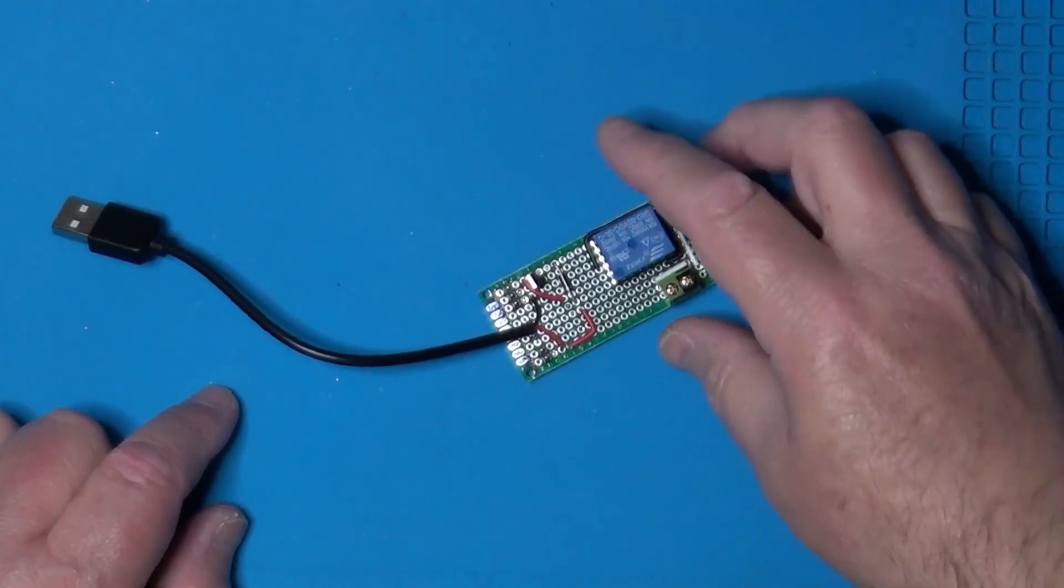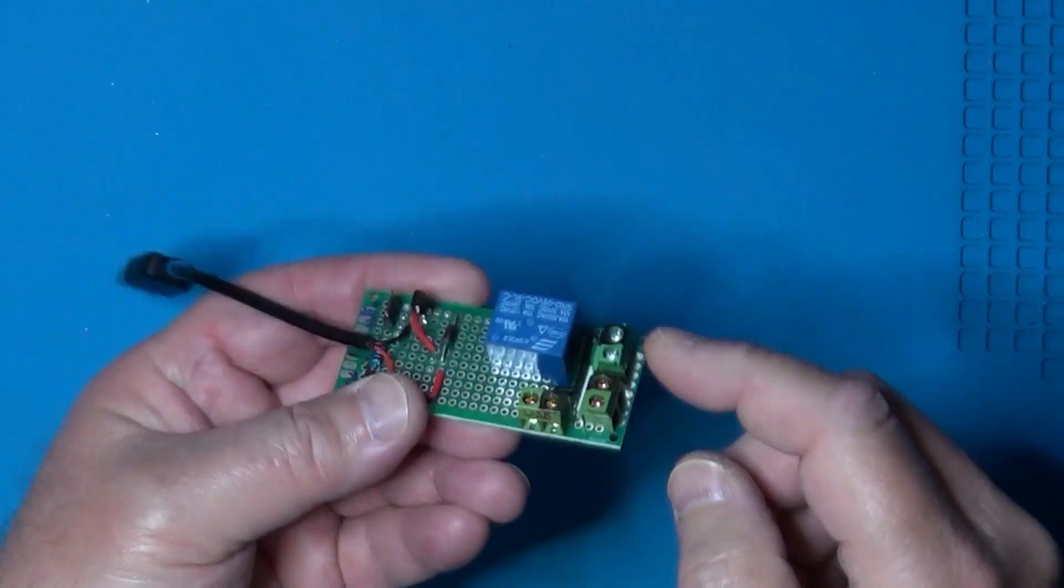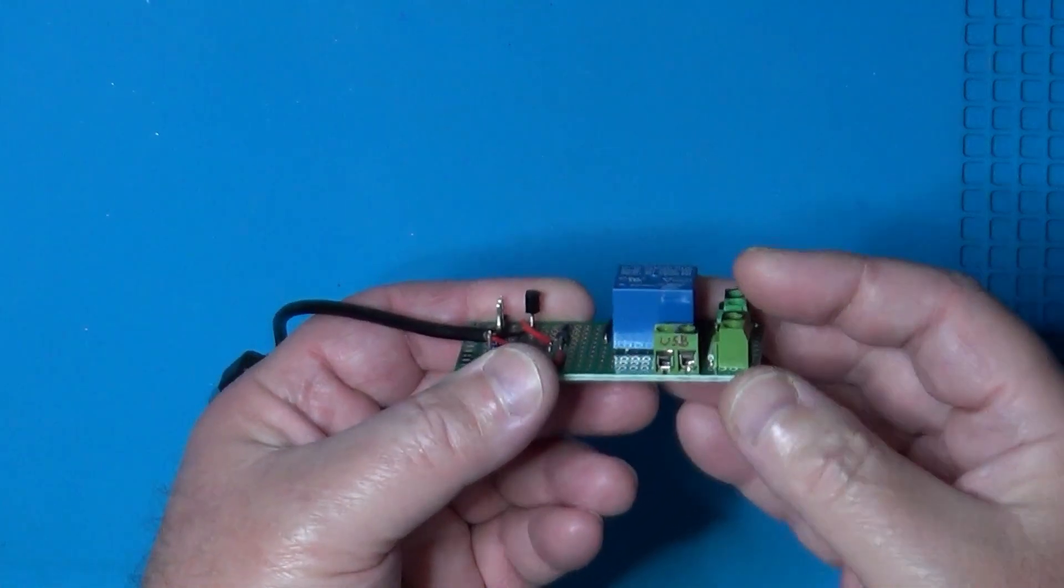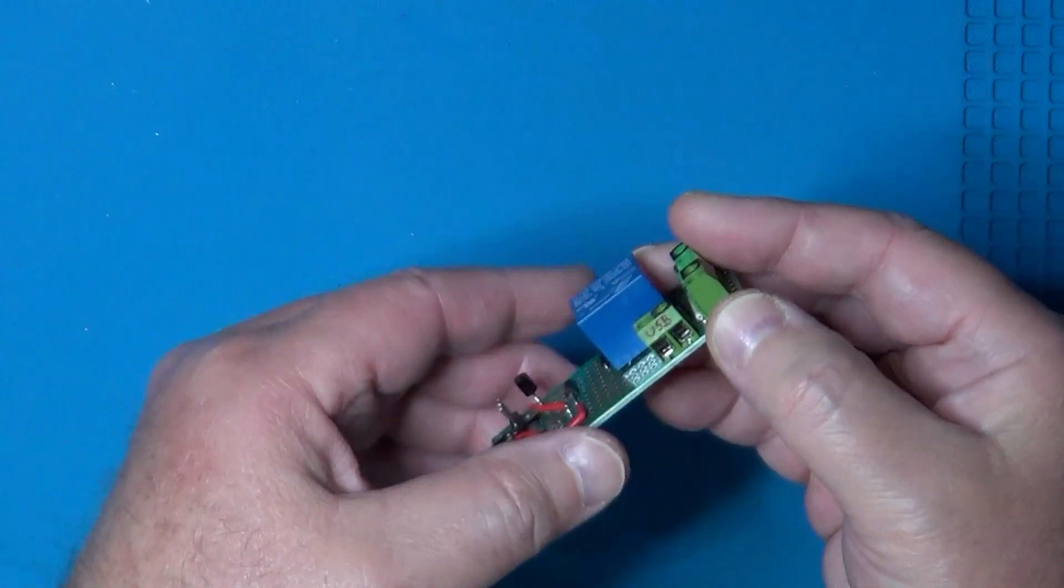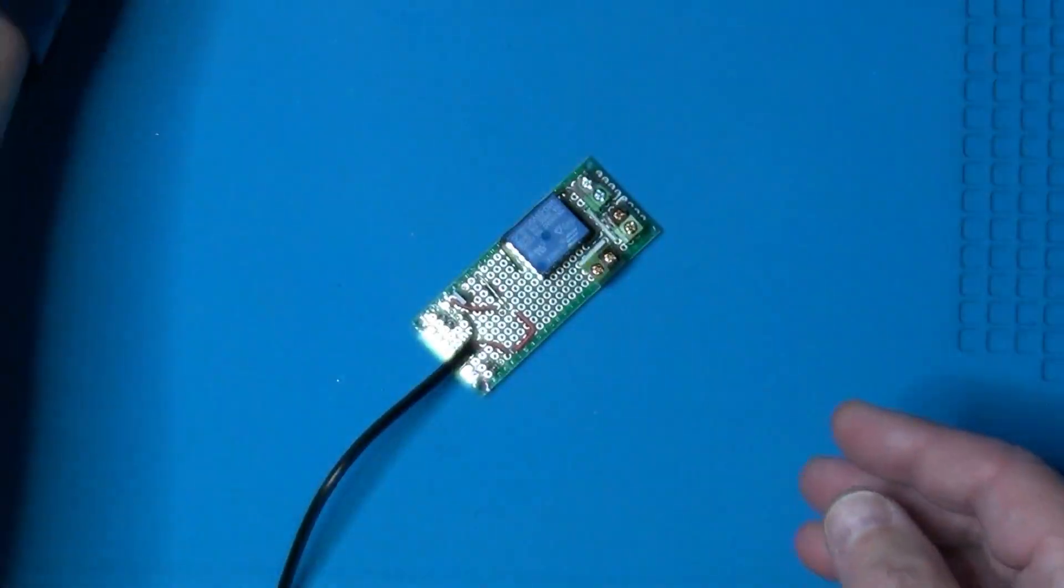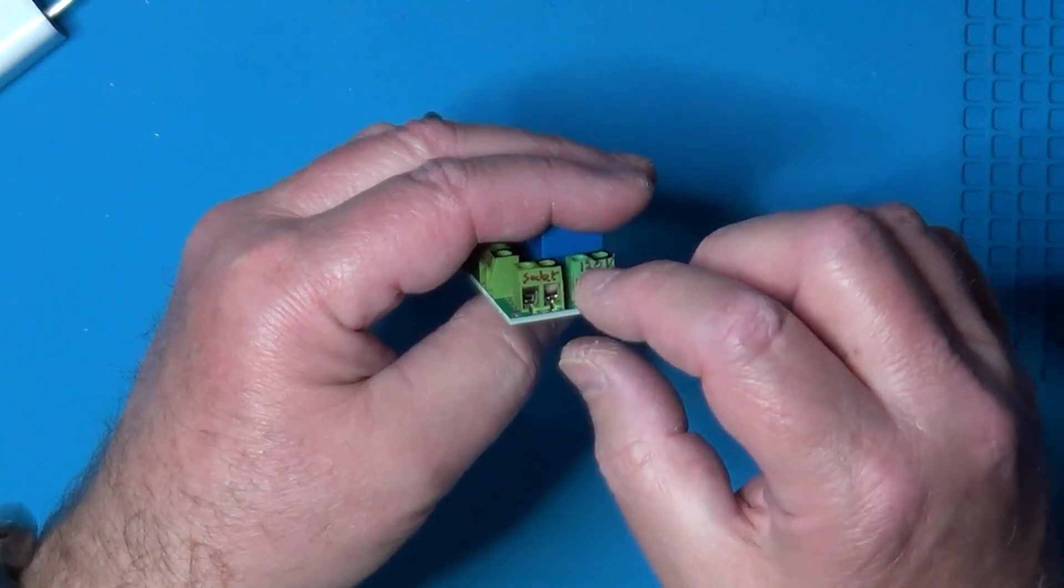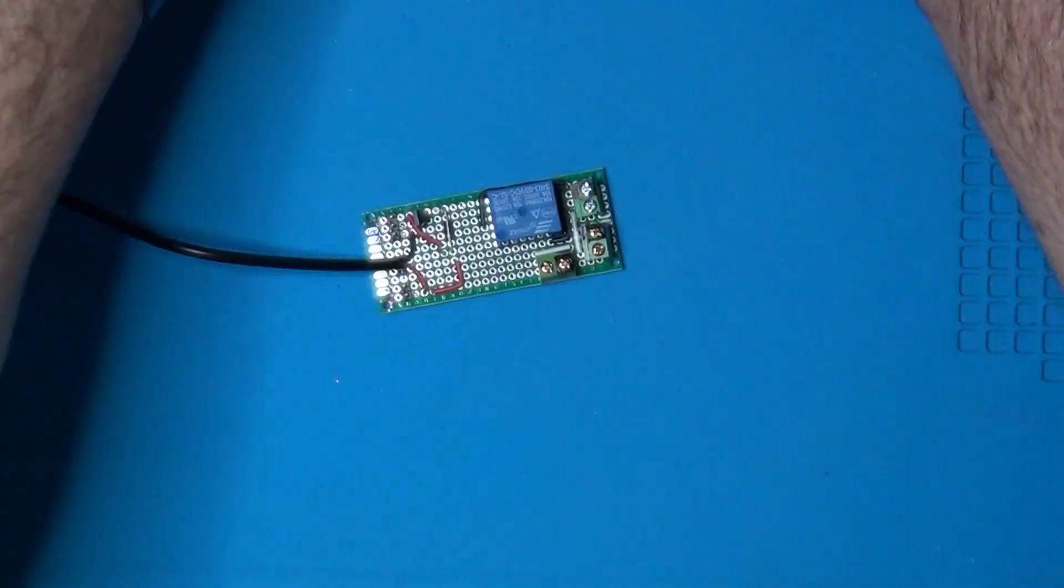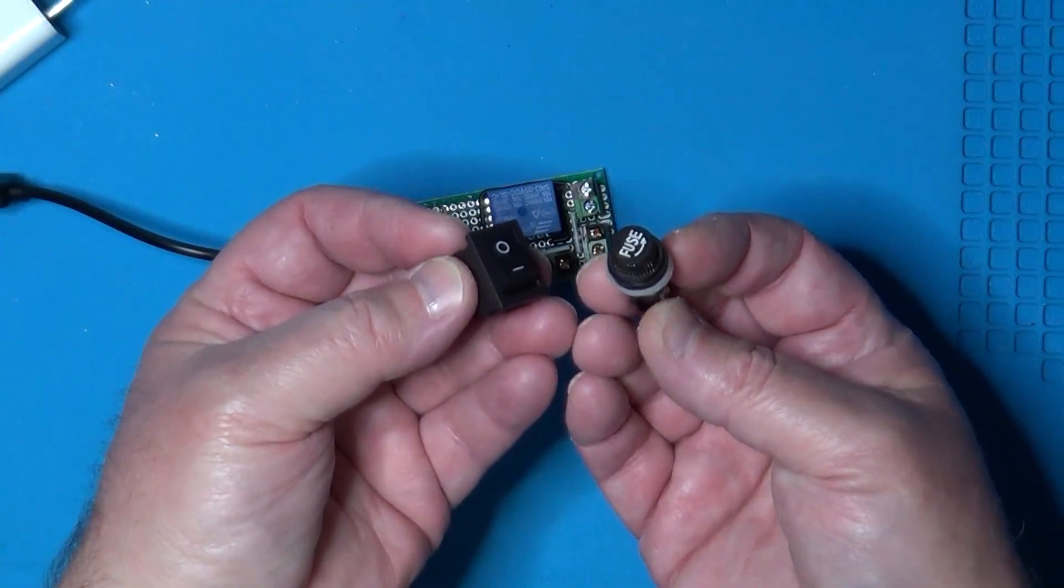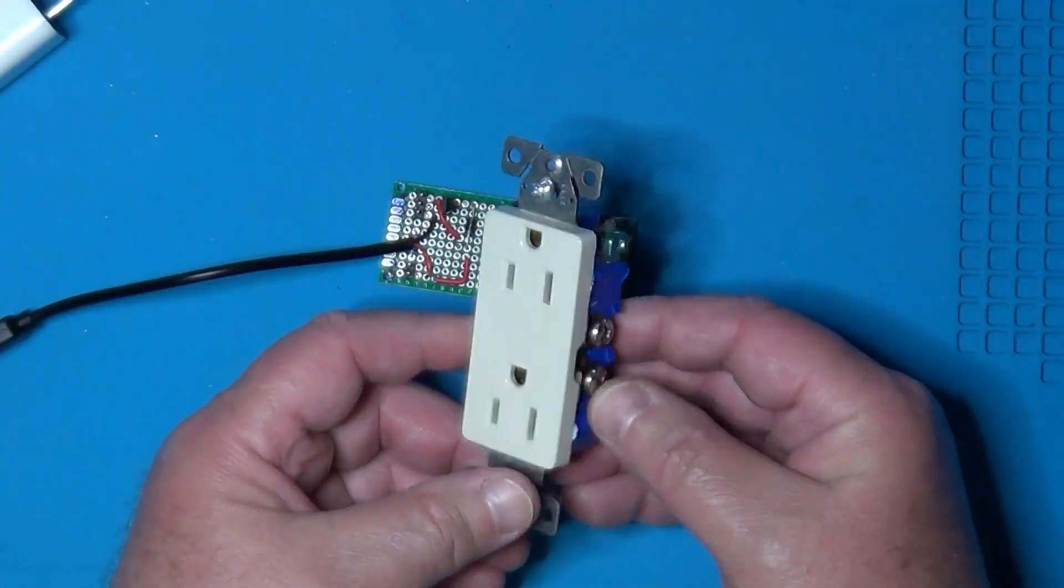And this is the circuit mounted on a perfboard. This is the transistor that controls the relay. These three terminal blocks are those that handle the 120-volt. Note how I labelled in black the hot side of the blocks to make sure I could connect properly everything together. This first one brings power to the USB charger. This other one goes directly to the power cable that plugs into the 120-volt power supply socket. The last terminal block is the one for connecting the power sockets controlled by the device.